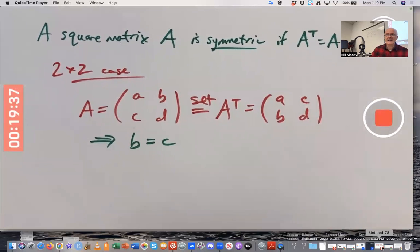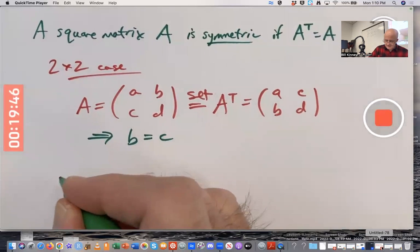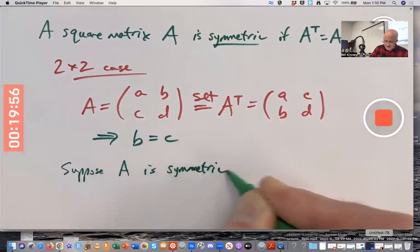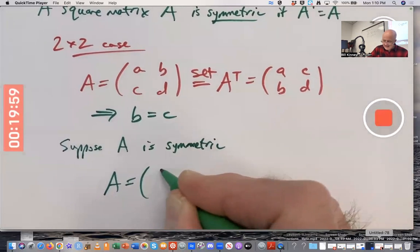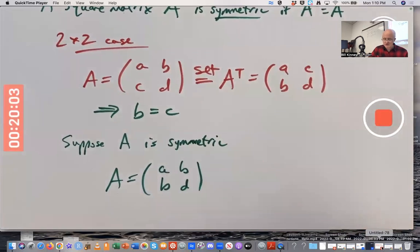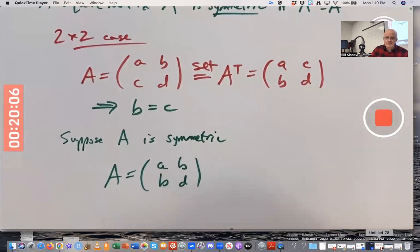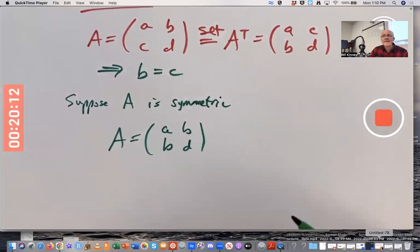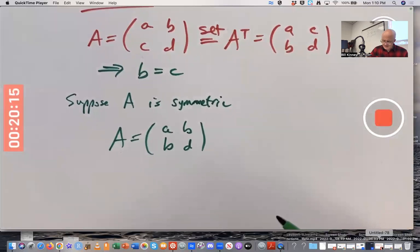Something important about the eigenvalues and eigenvectors of symmetric matrices is the main topic of the lecture. Let's see if we can figure out, so let's suppose A is symmetric. And let's write it as, say, A, B, B, D, or maybe I should use a c there. It doesn't matter.